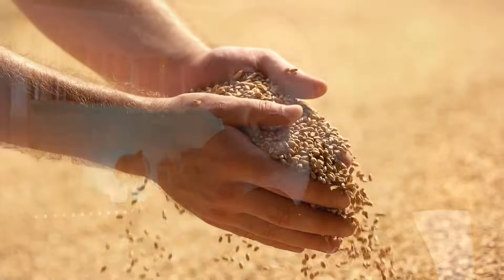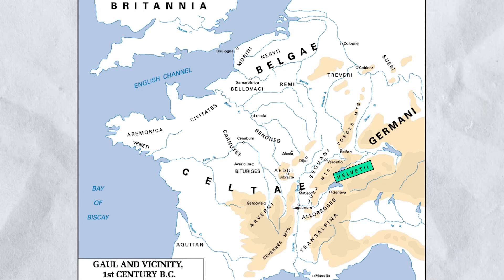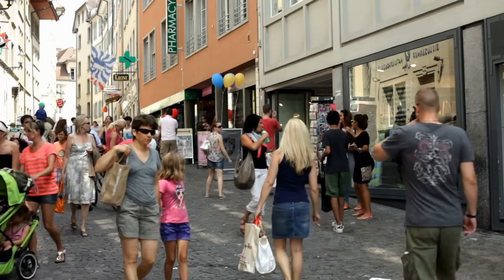Switzerland saw this arrival of steppe ancestry during the Bronze Age, and this is in line with various other parts of Europe. This steppe ancestry mixed with the two previous ancestral sources in Switzerland at that time: Western hunter-gatherers, and early European farmers from Anatolia originally. During the Iron Age, Switzerland was home to various Celtic tribes, and one in particular known as the Helvetii. The Celts brought their unique culture, language and artistic styles, and this period also helped contribute to the genetic diversity we see in Switzerland today.